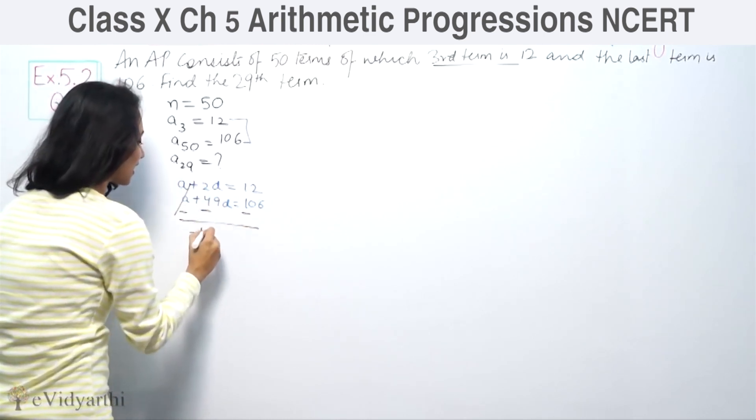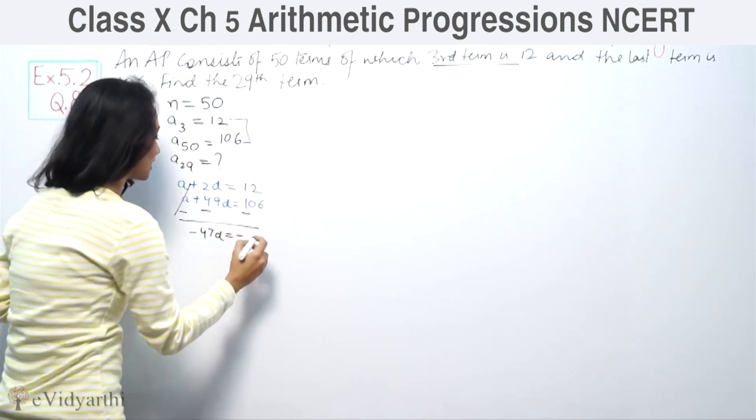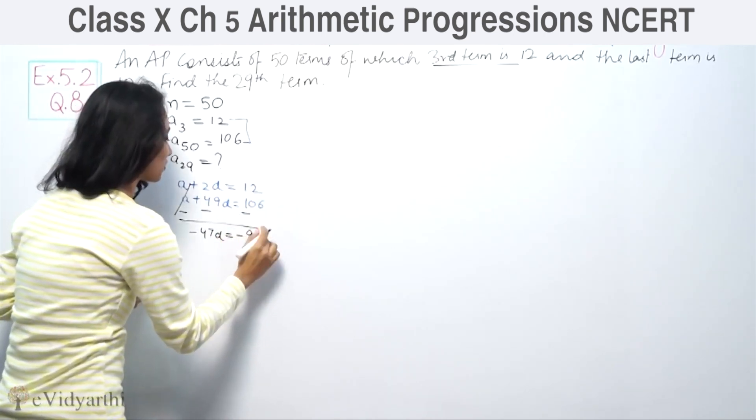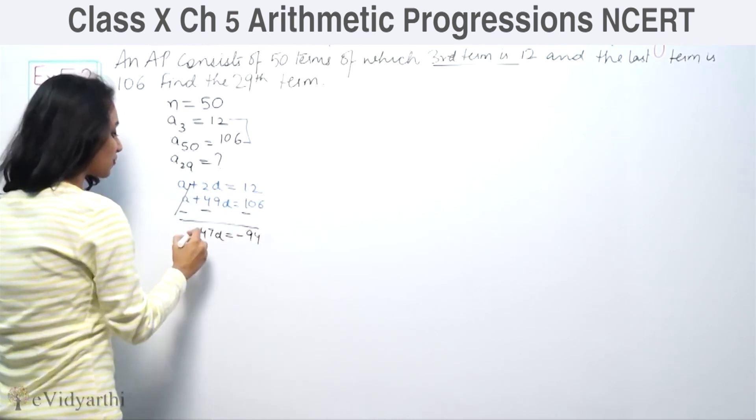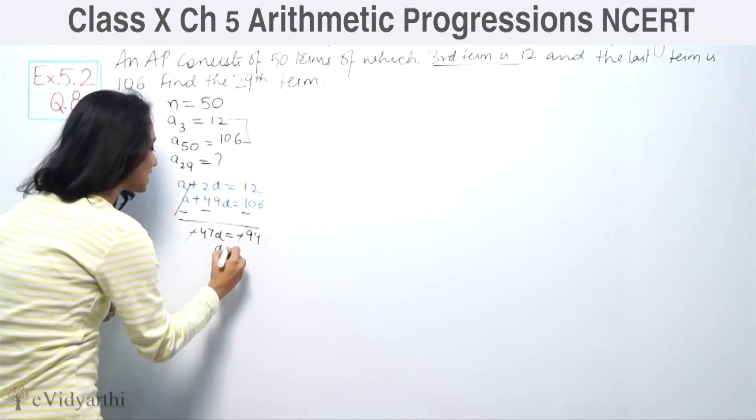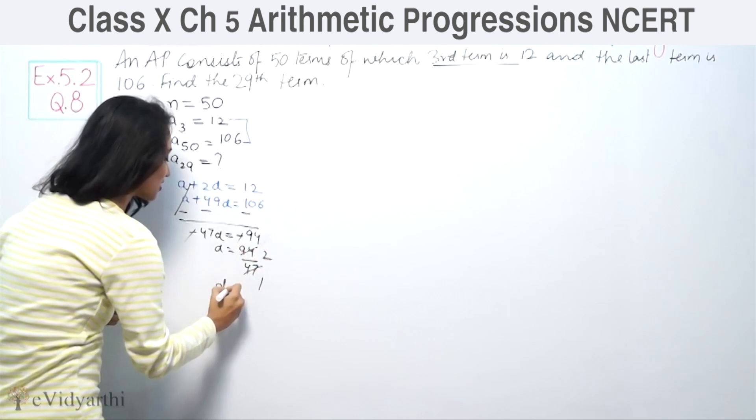A plus, minus minus. Plus minus minus, 3 equal to 7D. Plus minus minus 3 equal to 94. So minus minus cut, D is equal to 94 upon 47. So 47 comes up, D is 2.